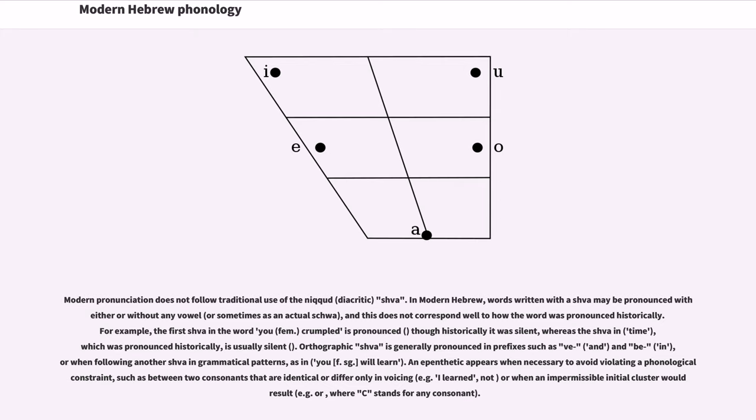An epenthetic e appears when necessary to avoid violating a phonological constraint, such as between two consonants that are identical or differ only in voicing (for example, 'I learned', not *lamadti), or when an impermissible initial cluster would result (for example, beCCC or leCCC, where C stands for any consonant).